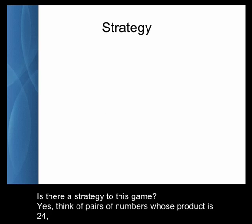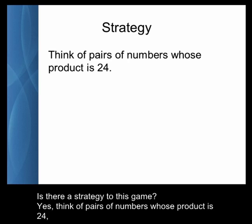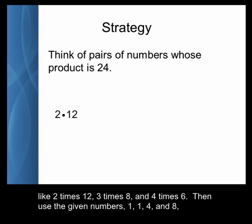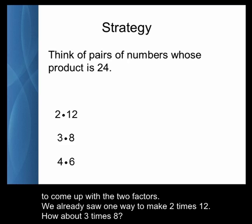Is there a strategy to this game? Yes — think of pairs of numbers whose product is 24, like 2 times 12, 3 times 8, and 4 times 6. Then use the given numbers 1, 1, 4, and 8 to come up with the two factors.